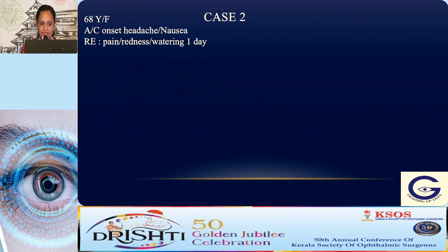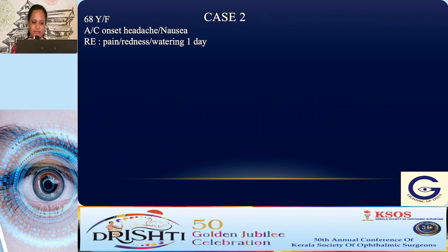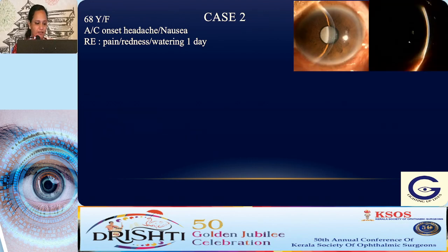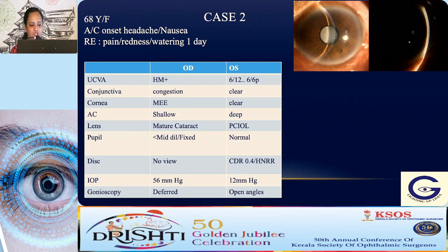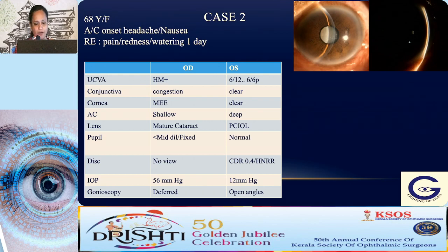Case 2: A 68-year-old female with acute onset headache, nausea, right eye pain, redness, and watering since one day. Uncorrected visual acuity was hand movements, with conjunctival congestion, epithelial edema, shallow AC, mature cataract, mid-dilated fixed pupil. IOP was 56 mmHg. The fellow eye was pseudophakic with CD ratio 0.4 and open angles. This was lens-induced acute angle closure due to pupillary block mechanism.